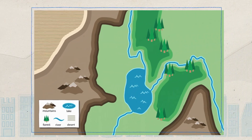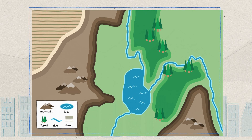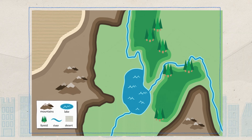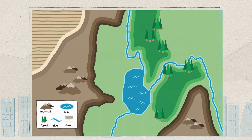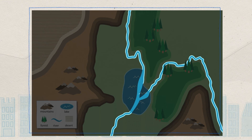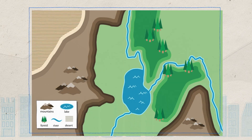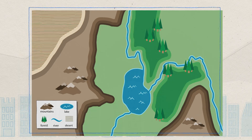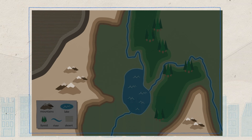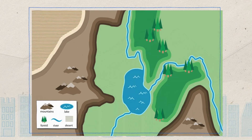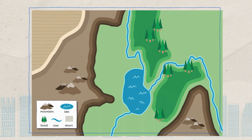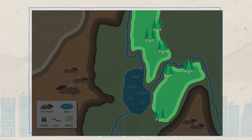Here is another map. Can you tell which areas show land and which areas show water? The key below says that this blue line represents a river. Here is the river on the map. There is also a brown triangle symbol, which represents mountains — two areas on the map have mountains. There is also a green tree symbol that represents woods, and the area of the map that has woods is near the river.